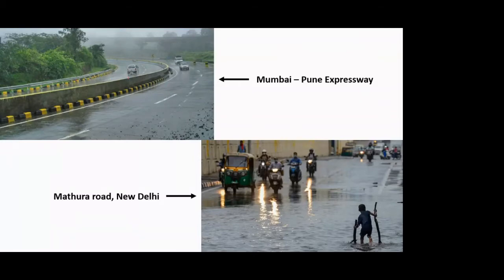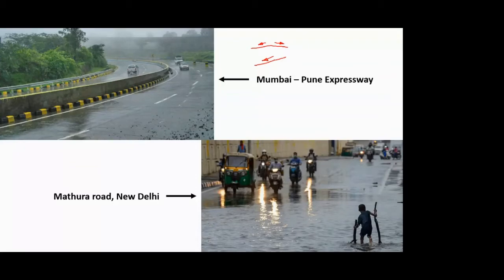The main purpose of camber is to provide runoff a way off the surface. A photo of the Mumbai–Pune Expressway shows a curve with unidirectional camber — because on a curve you have superelevation, so camber acts in one direction. You can visually see the tilt due to superelevation and camber combined. The water washes off the surface and accumulates in drains at the edge, which is the good functioning of a camber.